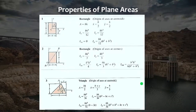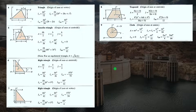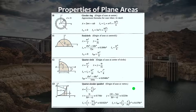Here are the properties of plane areas — just take a screenshot of these properties, as we will use them in solving problems. The shapes covered include triangles, right triangles, trapezoids, circles, circular rings, semicircles, quarter circles, and quarter circular arcs. Take note of the moment of inertia and Y-bar values for each shape so we can locate the center of gravity.